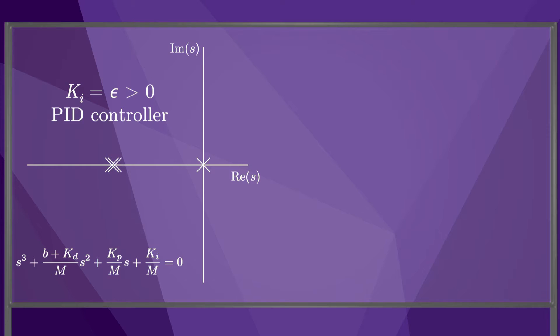As we increase the gain KI, the two co-located roots move away from each other on the real axis, and the root at the origin moves left. When we've increased KI sufficiently, the two roots meet on the real axis, while the third has moved further left.